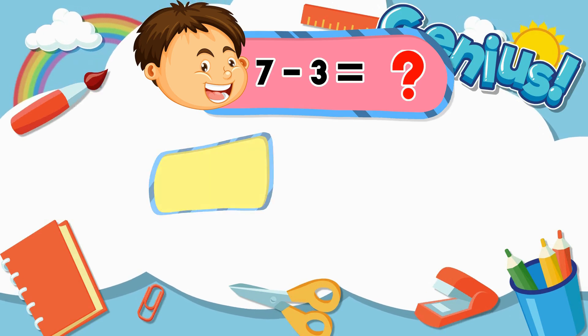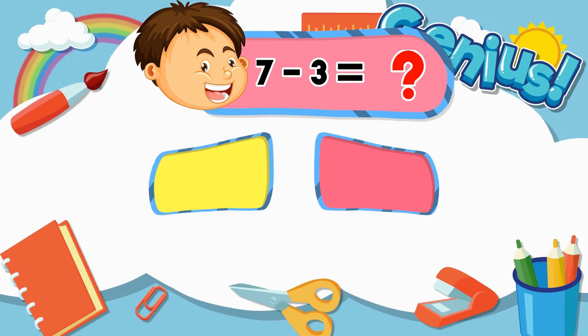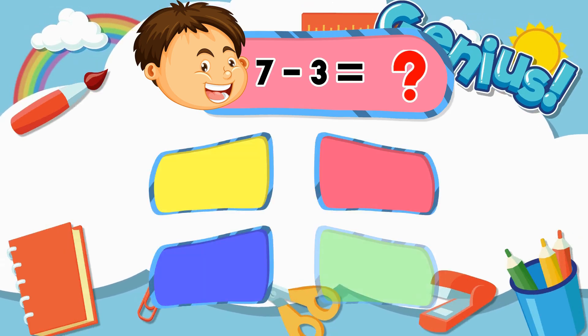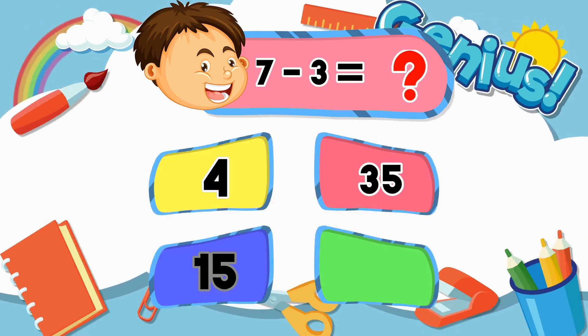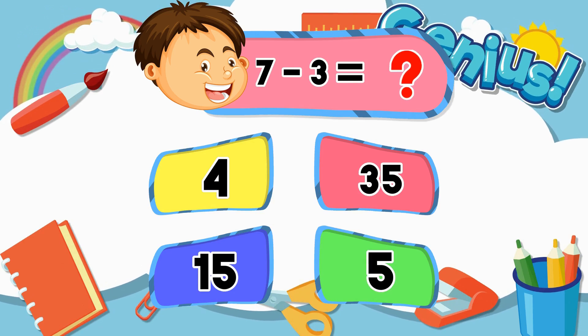What is 7 minus 3? 4, 35, 15, 5. The answer is 4.